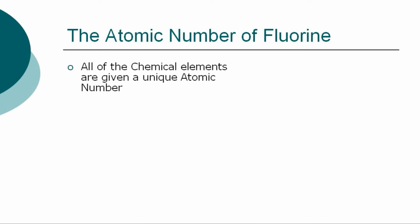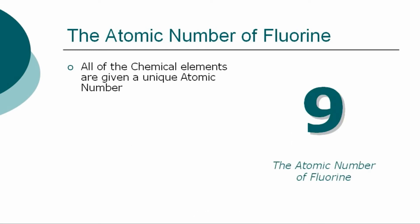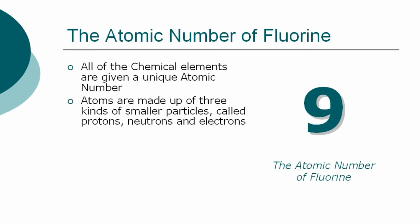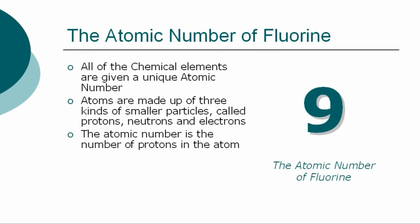All of the chemical elements are given a unique atomic number. The atomic number for fluorine is 9. Atoms are made up of three kinds of smaller particles called protons, neutrons, and electrons. The atomic number is the number of protons in the atom.